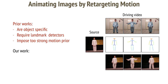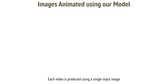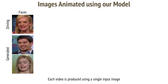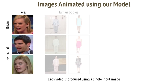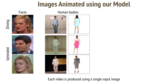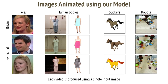Our work supports multiple objects of the same category, does not require a motion model, and learns to transfer motion and motion only, keeping the identity of the source object fixed. Once trained on faces, the method applies to any face. Once trained on human bodies, the model animates any human body. The same works for stickers and robotic arm movements.